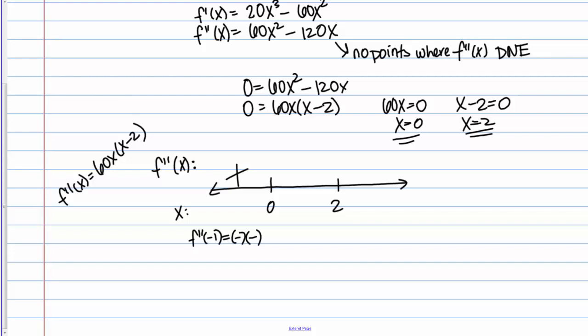Then our next interval is numbers between 0 and 2. I could pick 1, and then I would get a positive times a negative, which would give me a negative overall. Then finally I could pick 3, and that would give me a positive times a positive, or a positive overall.